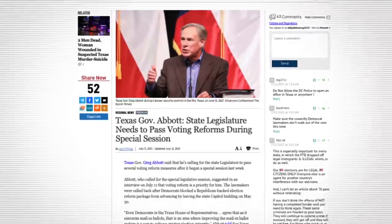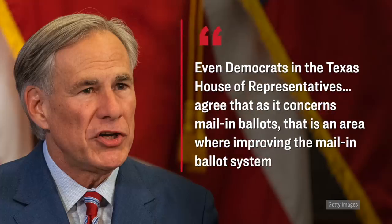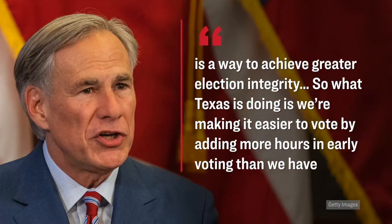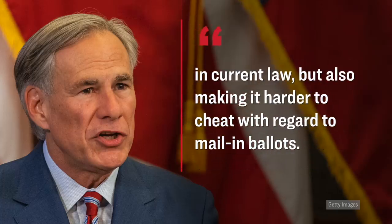That was back in May, about three months ago. However, just last month, there was a repeat performance. What happened was that Greg Abbott, who is the governor of Texas, he's a Republican, and he called a new special legislative session. The special session would have lasted for a period of 30 days, and its main agenda was to get the election bill passed into law. Here's what Governor Greg Abbott said. Even the Democrats in the Texas House agree that as it concerns mail-in ballots, that is an area where improving the mail-in ballot system is a way to achieve greater election integrity. So what Texas is doing is we're making it easier to vote by adding more hours in early voting, but also making it harder to cheat with regard to mail-in ballots.